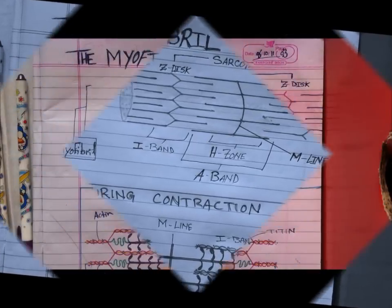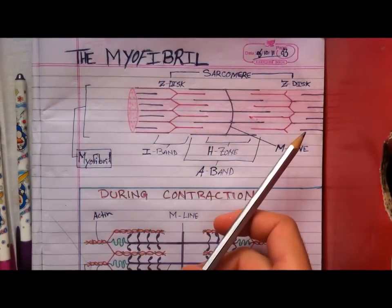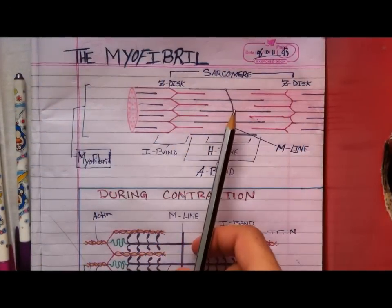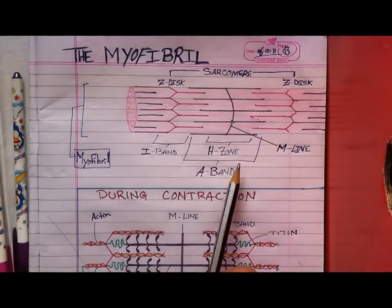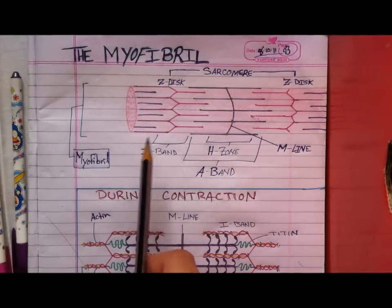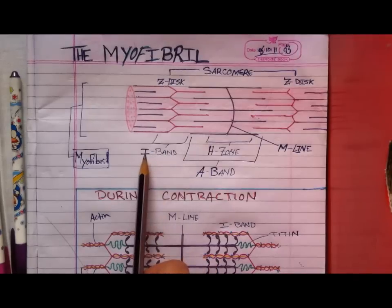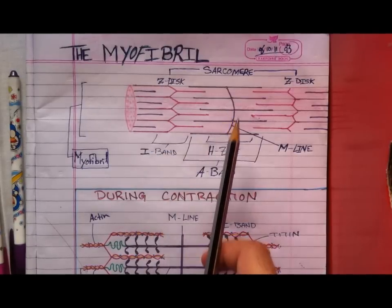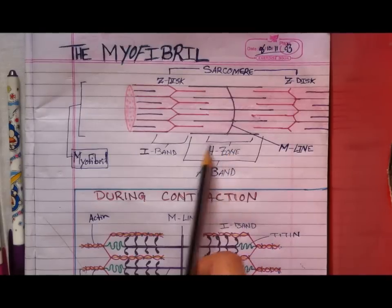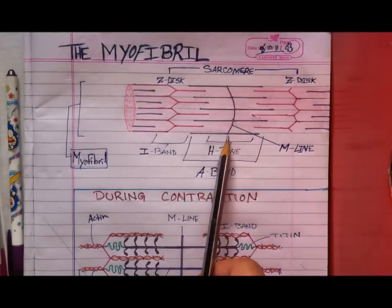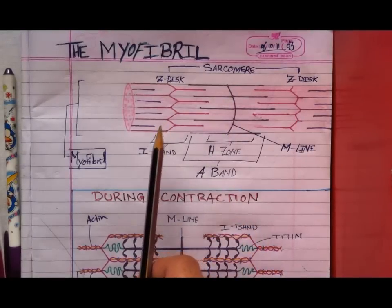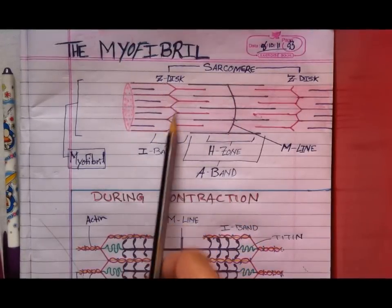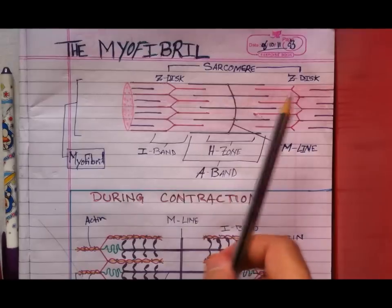All right, we're moving on to the myofibril. Now this here is your myofibril and it has a dark part and a light part. The dark part is called the A-band, anisotropic, and the light part is called the I-band, isotropic. In the middle of the A-band there's an H-zone because it's lighter, and in the middle of the H-zone there's an M-line.